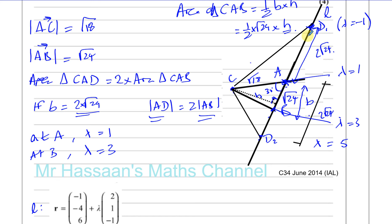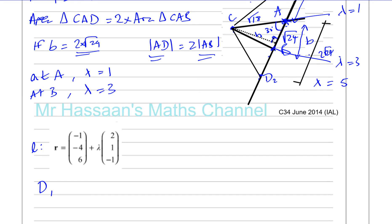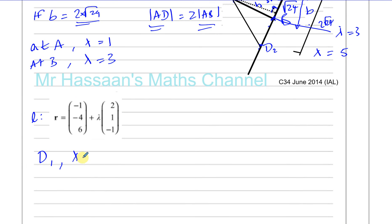The distance from A to B in terms of lambda is two, so the distance from A to D must be four. Going from lambda equals one down by four gives lambda equals minus three for D1. For D2, going up by four from lambda equals one gives lambda equals five. So at D1 lambda equals minus three, and at D2 lambda equals five.